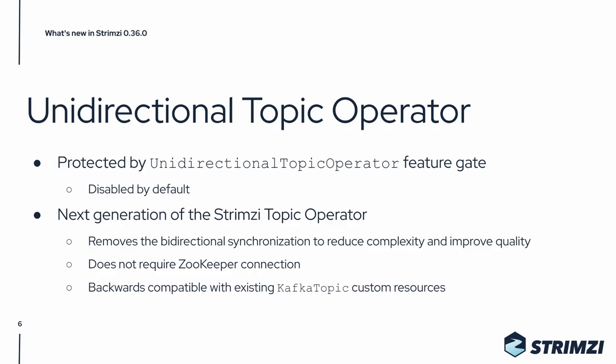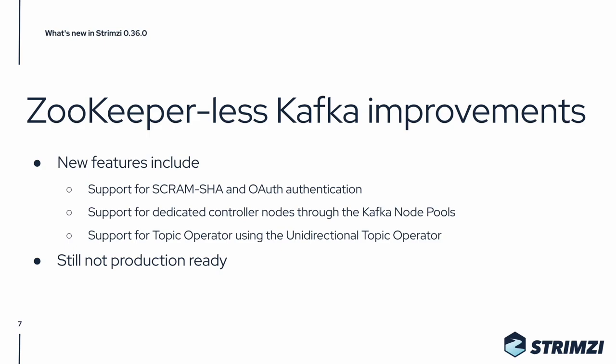In the coming days we'll have more blog posts and videos to cover both the Unidirectional Topic Operator and Kafka Node Pools. There are also many improvements to running Kafka in the KRaft mode without a ZooKeeper cluster. New features include support for SCRAM-SHA and OAuth authentication, support for dedicated controller nodes using the Kafka Node Pool feature, and support for the Topic Operator using the Unidirectional Topic Operator feature gate. Keep in mind that KRaft support is still not production ready and there are many important features still missing in both Apache Kafka and Strimzi.